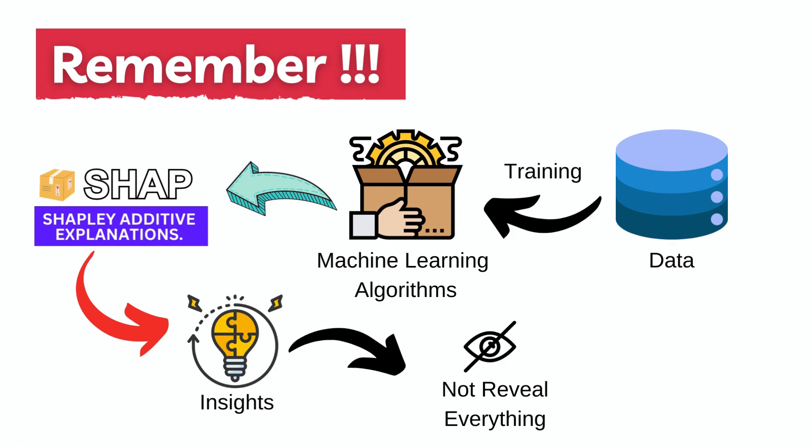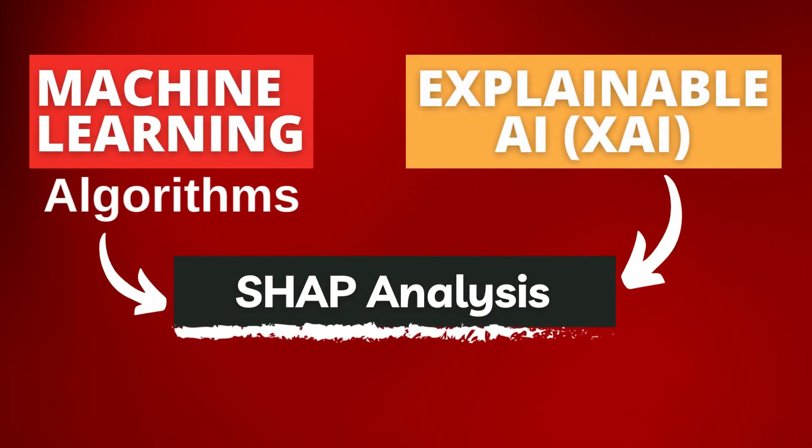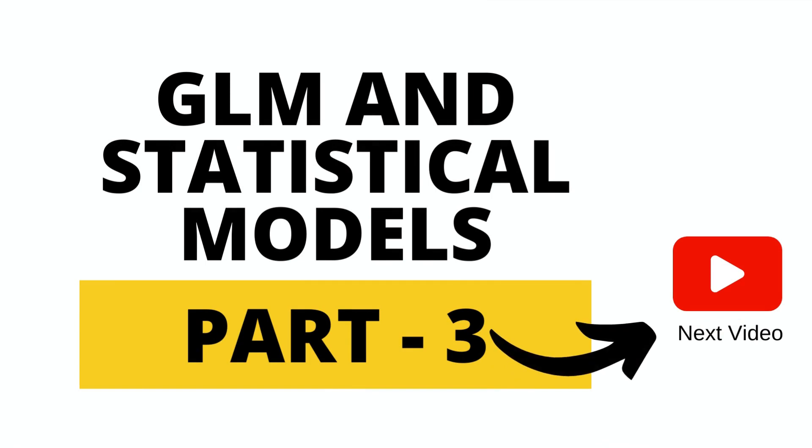And there you have it, an introduction to the fantastic world of SHAP analysis from understanding its purpose to getting hands-on with the code. Now you are equipped with building machine learning models with explainable AI. Remember, SHAP analysis isn't just about numbers, it's about making machine learning models more transparent and accountable. Thank you for joining me today. In our next video we'll talk about the stats model library and GLM models to build simpler models more explainable. Don't forget to like, subscribe, and share our YouTube channel. Thank you so much.